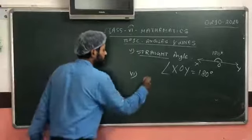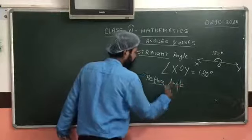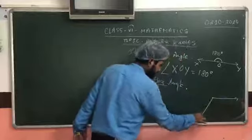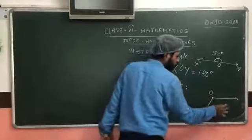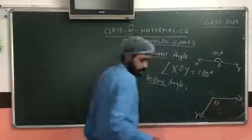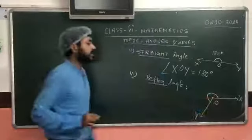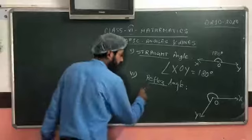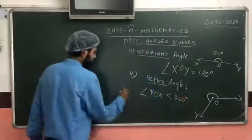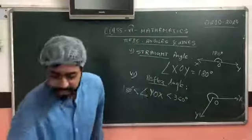Number six is the reflex angle. What is the reflex angle? Say this point is O, this point is X, and this point is Y. The larger angle formed here is called the reflex angle. Any angle which is greater than 180 degrees but lesser than 360 degrees is called the reflex angle.